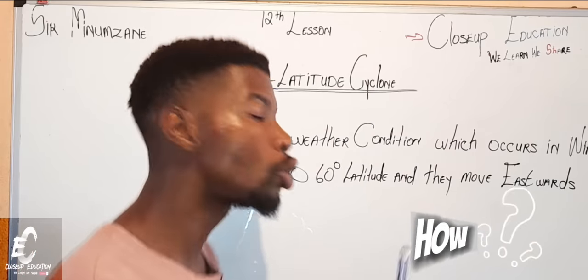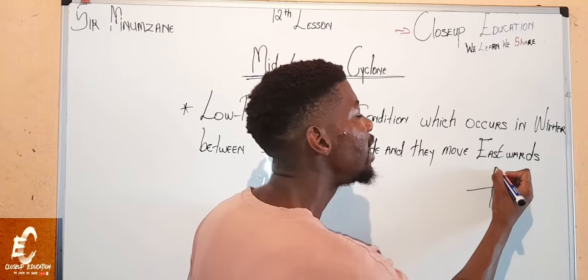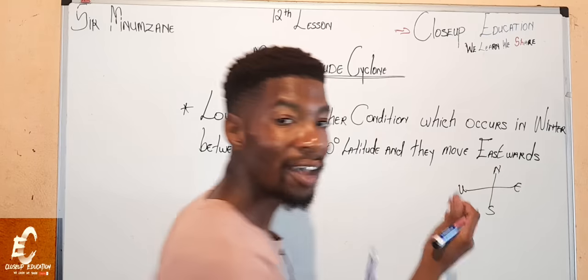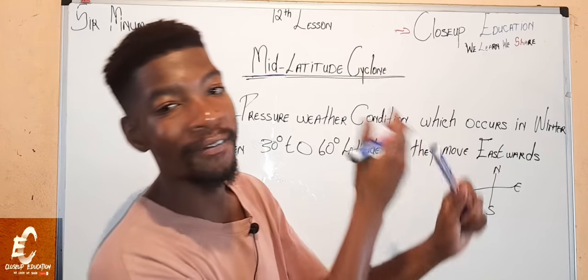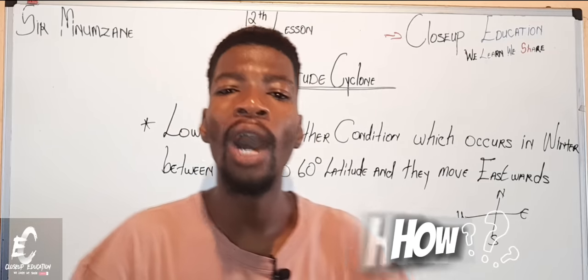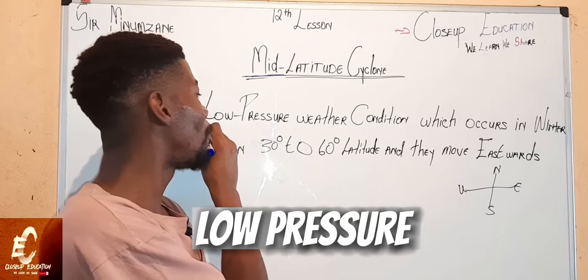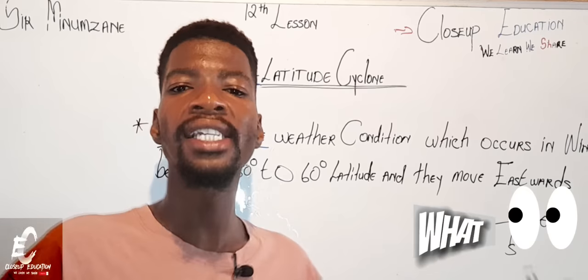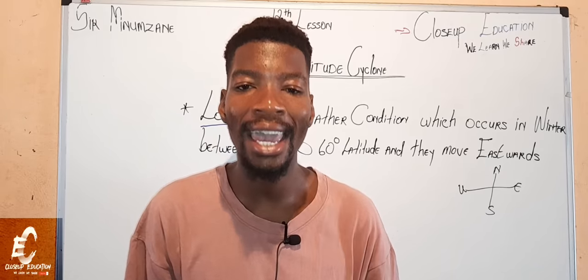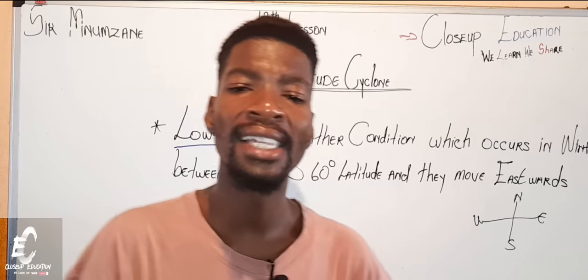How did I find eastwards? This is our direction — you write your cross and say never eat sour worms. I've spoken about this in my first video. So how do we break down this definition? We first understand that this is a low-pressure weather condition. What is low pressure? Low pressure simply means there is rising air, meaning this weather condition is associated with rising air.